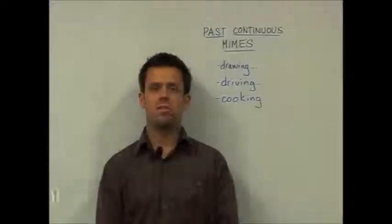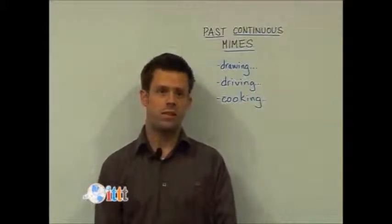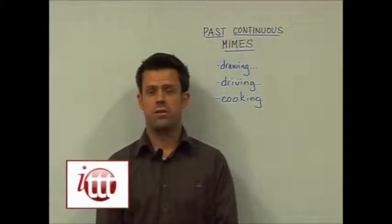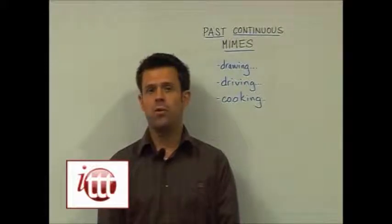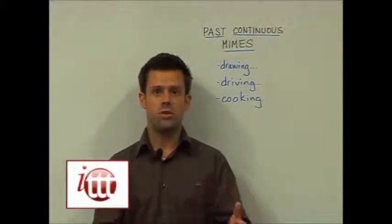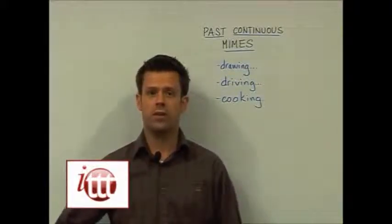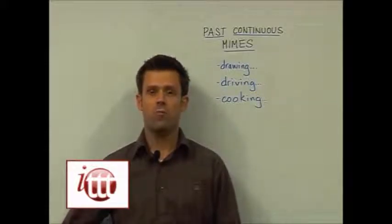Working off of our previous mime idea for the present continuous, now we can use the same idea for the past continuous. The key difference here will be that while the student is doing the mime, the students in the audience are not able to guess what the person is doing. Rather, you'll have them stop first, then have the group making sentences for the past.